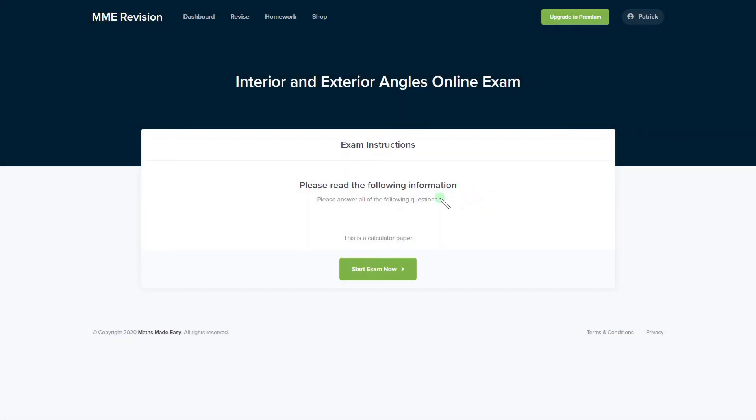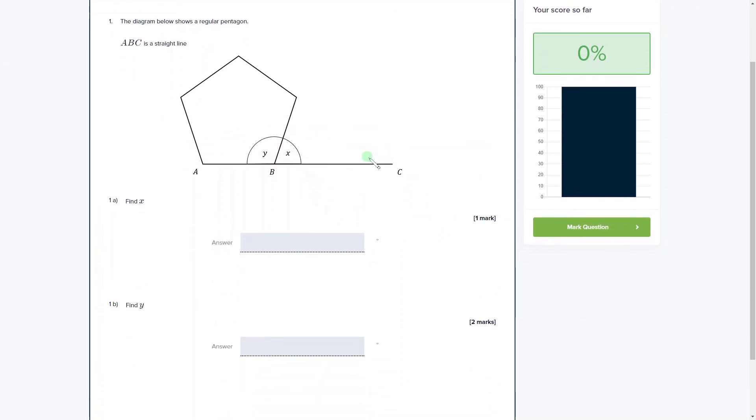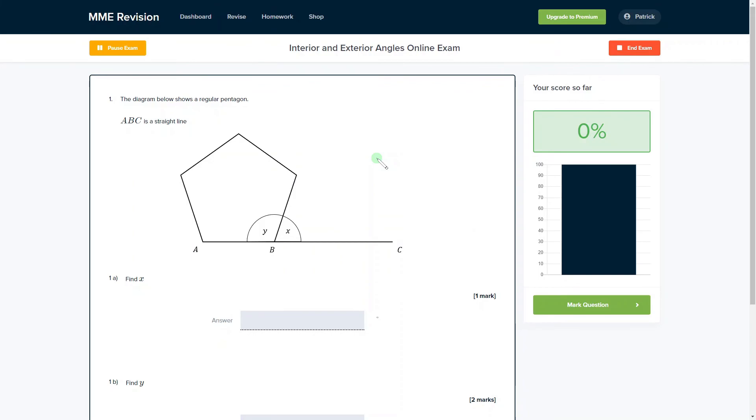So if you'd like to practice more questions about interior and exterior angles, we have an online exam which is available through our revision platform. You'll find plenty of questions and you'll get instant feedback on each and every one of them. If you're interested, you can click the link below.